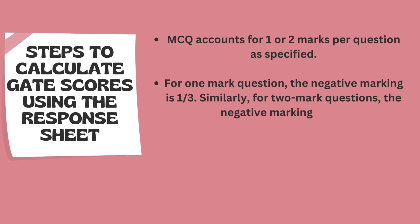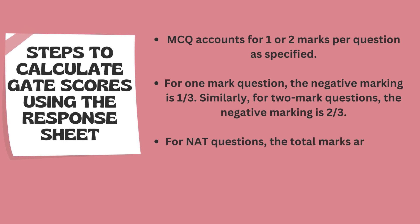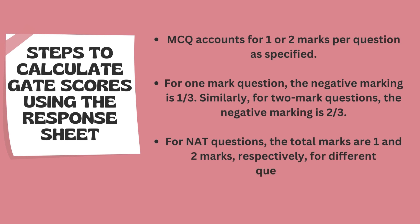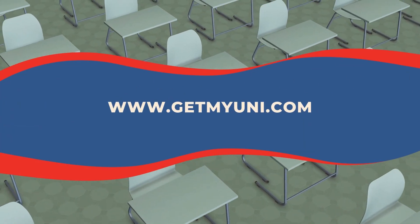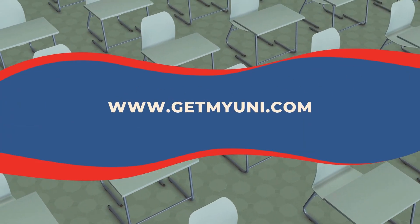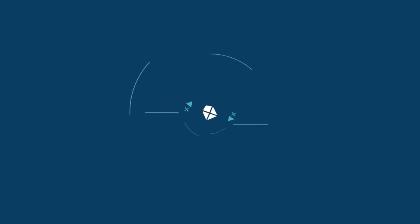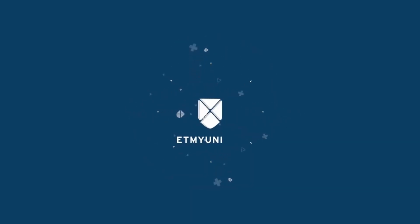MCQ questions account for one or two marks each. For a one-mark question, the negative marking is one-third. For two-mark questions, the negative marking is two-thirds. For NAT questions, the total marks are one and two marks respectively for different questions. To know more, check out our website at www.gatemuni.com.